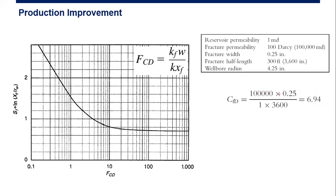We can calculate, for example, like this one. If the reservoir permeability is one millidarcy, fracture permeability is 100,000 millidarcies, fracture width is 0.25 inches, fracture half length is 300 feet, and wellbore radius is 4.25 inches, then you can simply calculate the CFD.